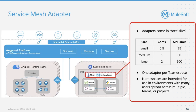A few other technical details about the service mesh adapter: it is critical for managing communication between microservices and the control plane. It comes in three sizes — small, medium, and large — with 25, 50, and 100 API limits respectively. There is only one adapter per namespace, and namespaces are intended for use in environments with many users spread across multiple teams or projects.